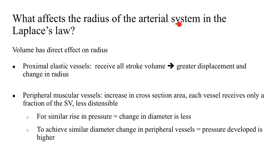What affects the radius of the arterial system in the Laplace's law equation? Volume has a direct effect on radius or diameter. In the case of proximal elastic vessels — the central vessels — they receive almost all of the stroke volume and hence there is a greater displacement and a greater change in the radius on account of these elastic fibers. When it comes to the peripheral muscular vessels, the number of muscular fibers is more than the elastic fibers, and as a result these vessels are less distensible. Additionally, as you go down the arterial tree, there is an increase in cross-sectional area and each vessel receives only a fraction of the stroke volume. This means that for a similar rise in pressure, the change in diameter or radius is less. In other words, in order to achieve a similar diameter change in the peripheral vessels, the pressure developed in these vessels is much higher than the pressure developed in the central elastic vessels.